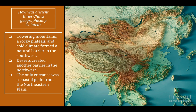How was ancient inner China geographically isolated? Inner China consists of the North China plain and the Changjiang basins. This map tells us why inner China is isolated: towering mountains, rocky plateaus, and a cold climate formed a natural barrier in the southwest. The massive mountains and plateau are largely inhospitable — no one could live there — forming a barrier to the Changjiang basins area. Deserts also created another barrier in the northwest.